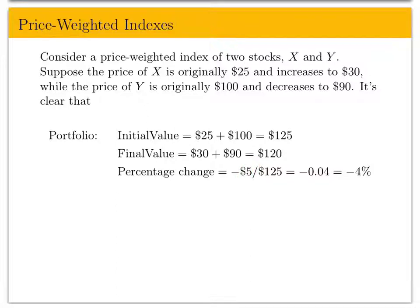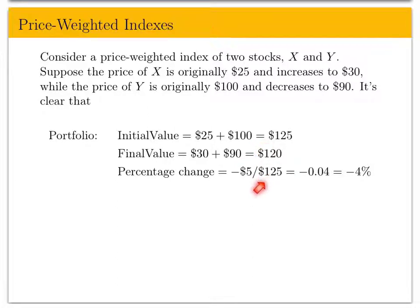What is the percentage change? The difference between the initial and final value is negative $5. So you have negative $5 divided by the initial valuation of $125, which turns out to be a loss of 4%.